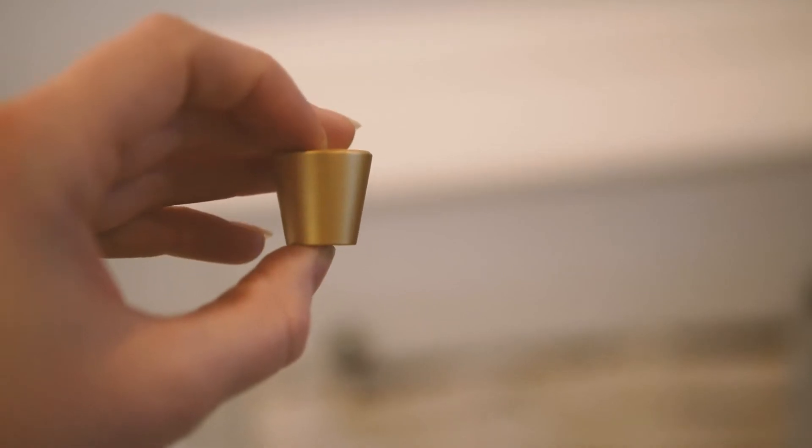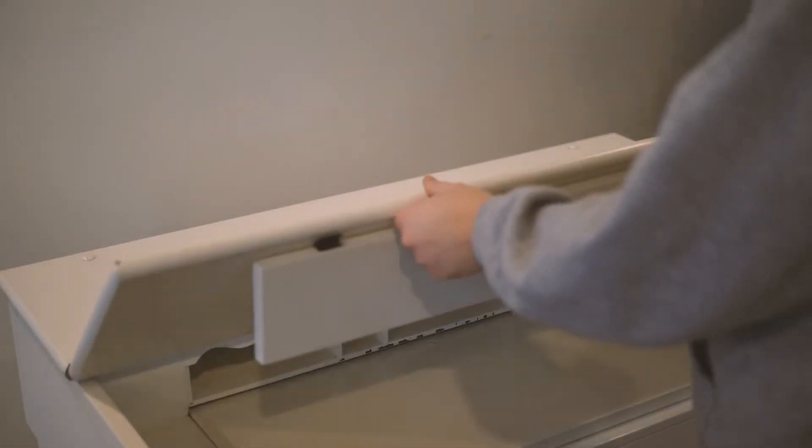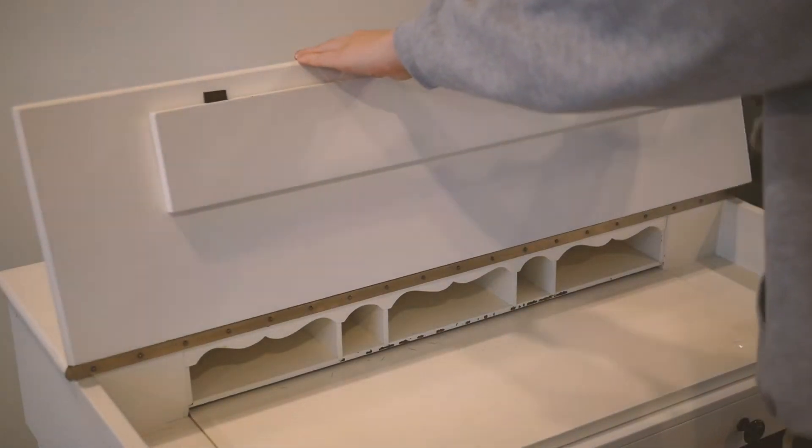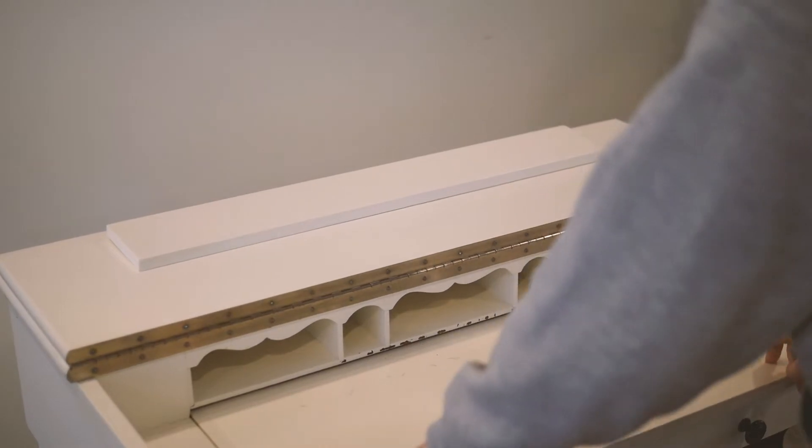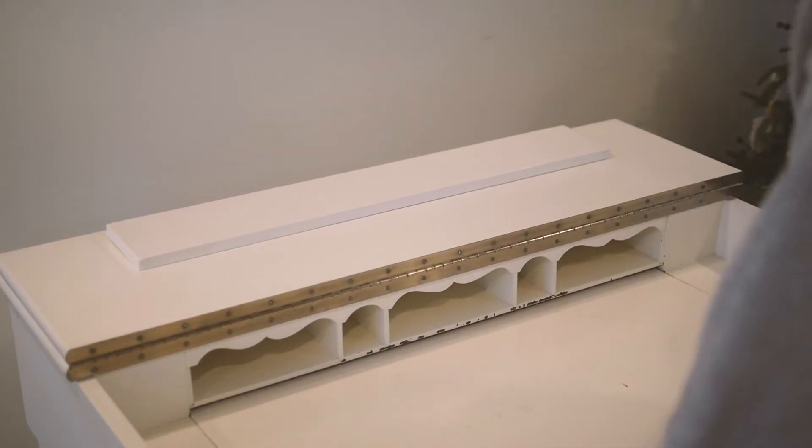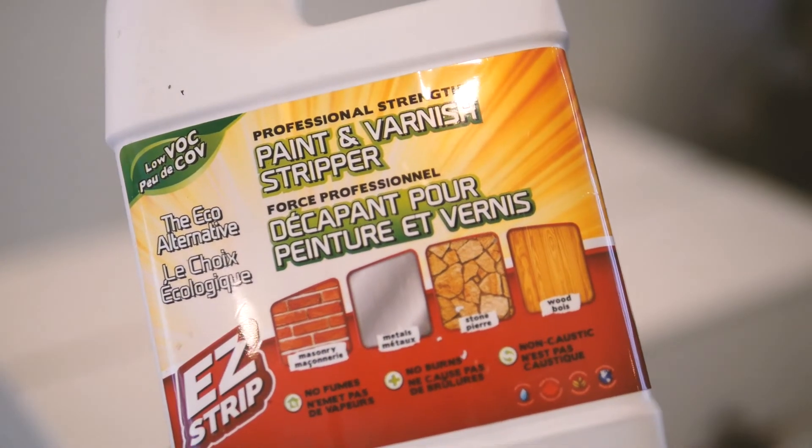This desk actually opens up and then there's a piece inside that you pull out, and I guess that's supposed to be for writing on. I'm going to start this restoration off with pouring stripper all over the top of the desk.